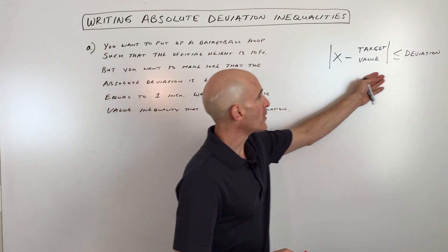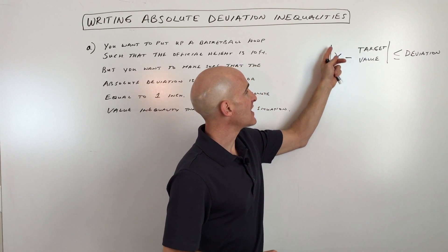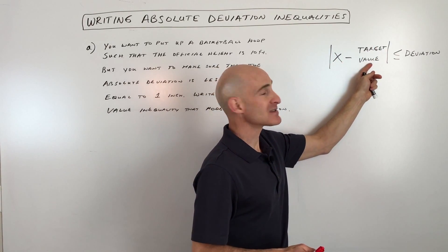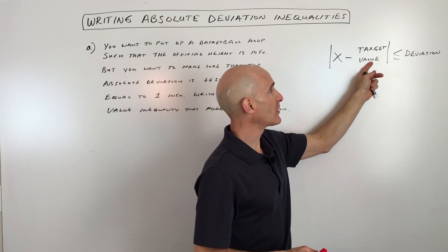And you can see I've written a formula for us here. You can take a look at this. It's the absolute value of X minus the target value, what you're aiming for.